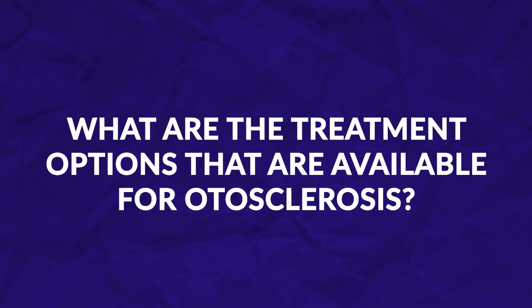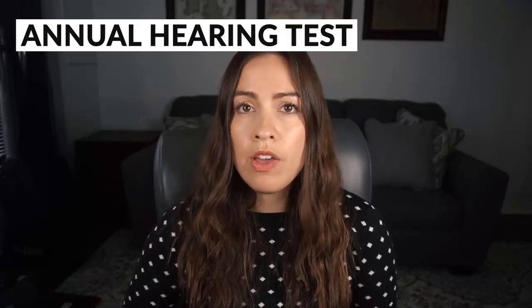Treatment options for otosclerosis include surgical intervention, audiological intervention, or simply monitoring and waiting to see whether hearing loss or symptoms progress. Many individuals decide to monitor their otosclerosis through an annual hearing test, evaluating whether symptoms of hearing loss, ear fullness, tinnitus, or dizziness worsen over time. If they start to notice greater degrees of hearing loss, they may then look into surgical or audiological intervention.